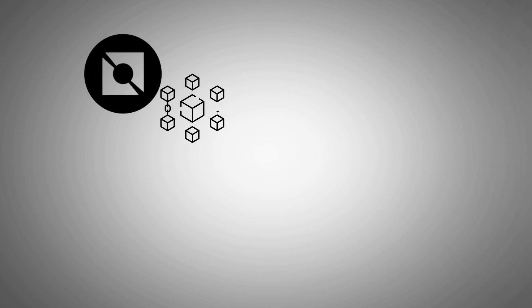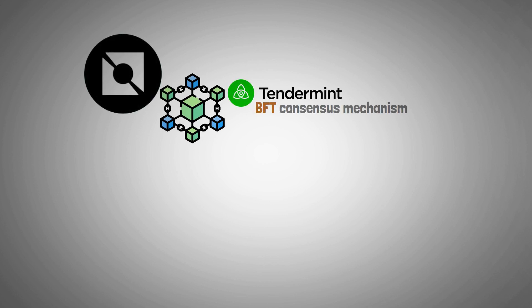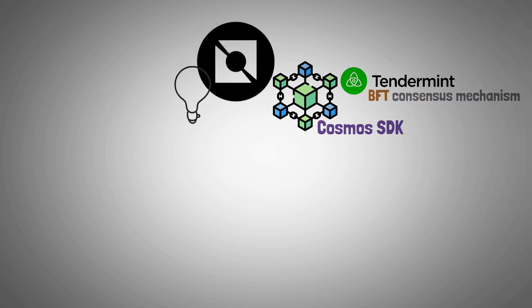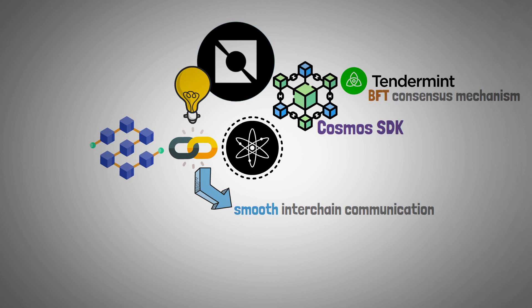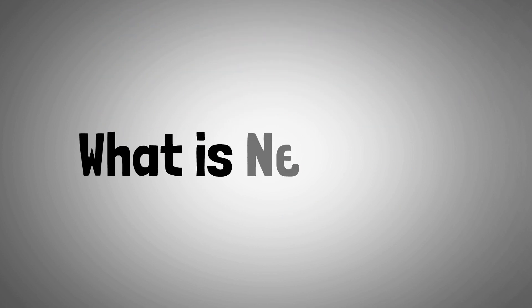Neutron, a blockchain driven by the Tendermint BFT consensus mechanism and the Cosmos SDK, is distinct in that it can create links between the Cosmos ecosystem and other networks, opening up a channel for smooth inter-chain communication. Let's start with what is Neutron.